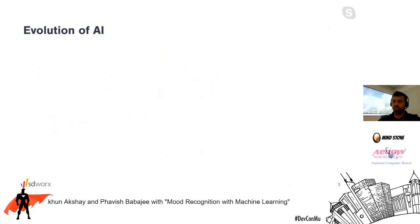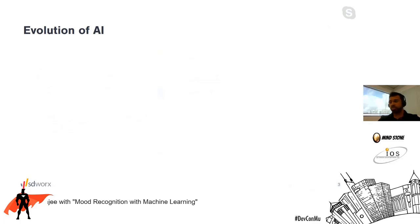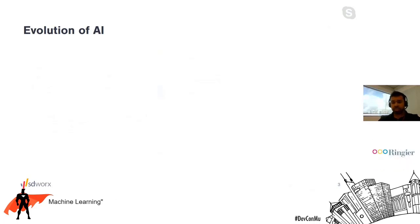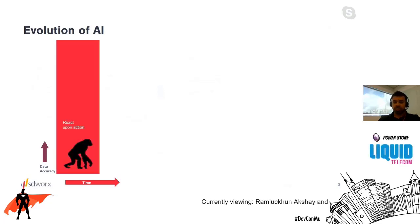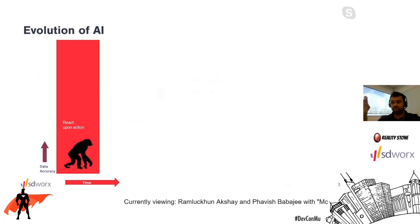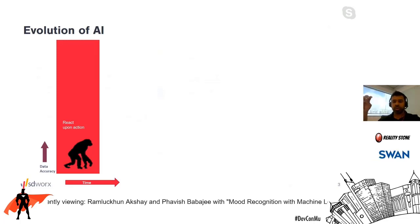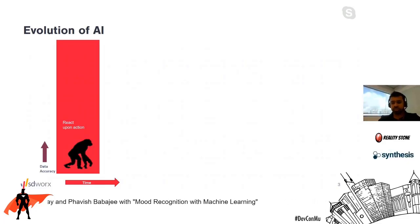We'll start with the evolution of AI. You have two aspects: the concept of data accuracy itself and how it has improved over time. The first concept was developed in 1950, where for every action you put forward, there was a proper reaction to it. That was the native one.